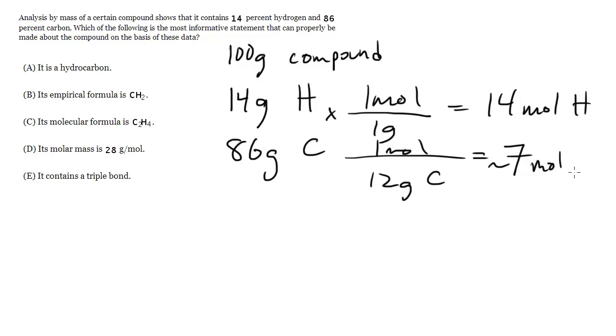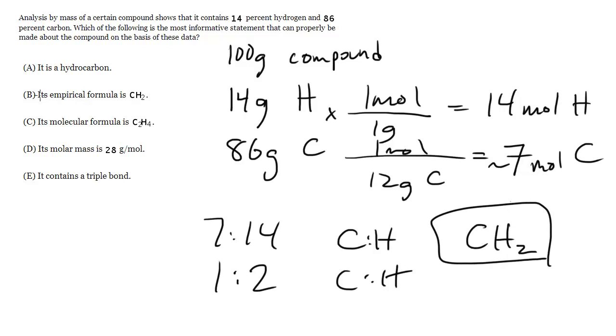Not exact, but pretty close. So 14 moles of hydrogen, about 7 moles of carbon. Notice we have a 1 to 2 ratio, a 7 to 14 ratio of carbon to hydrogen. We can reduce that down to a 1 to 2 ratio of carbon to hydrogen in terms of moles. So its empirical formula is indeed CH2, choice B.